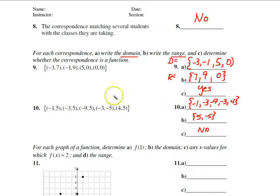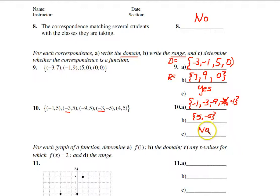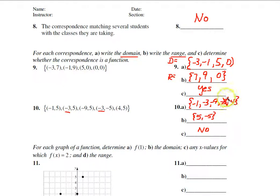In number ten, we notice there is a negative three appearing twice in the domain. I wrote it twice, but it should only be written once. Because a domain item — an X item — is repeated, it is not a function. The fives in the range are also repeated; we only write them once, and we also have a negative five. So this is not a function because the X item appears more than once.